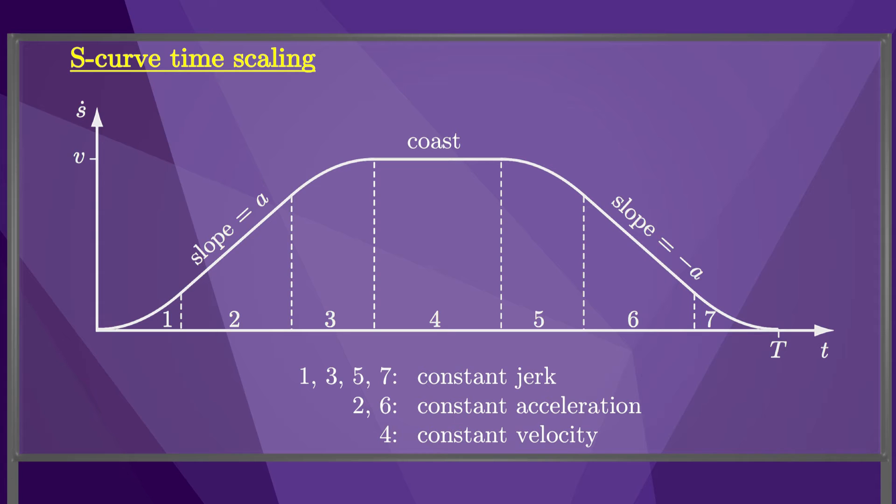Then it follows a constant acceleration, followed by a constant negative jerk, followed by a coasting period at constant velocity. Then the robot slows down symmetrically to the first three segments. The acceleration is zero at the beginning and end of the motion.